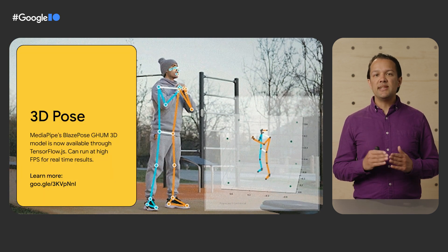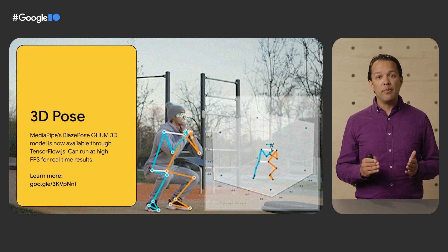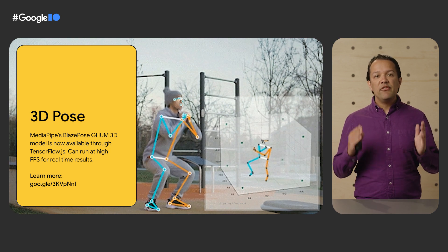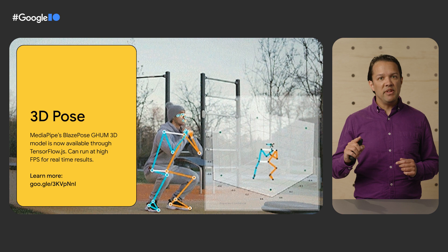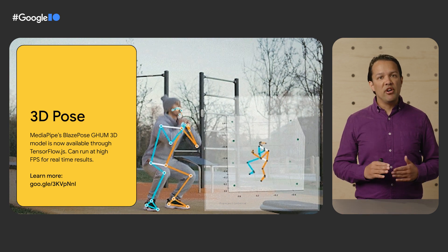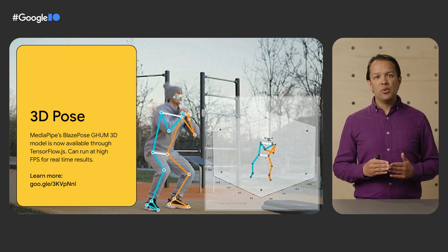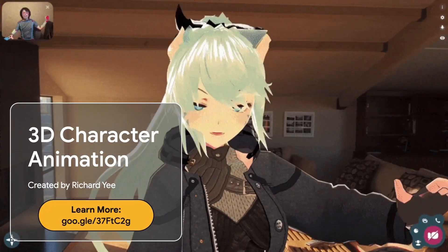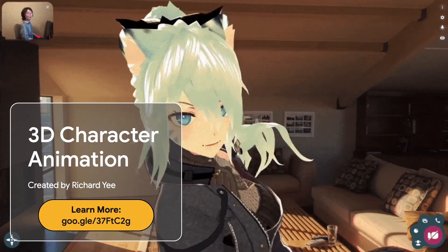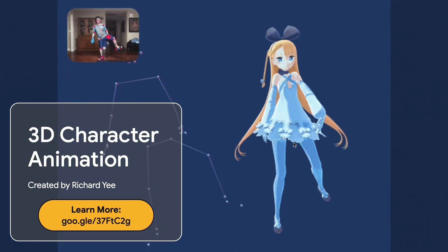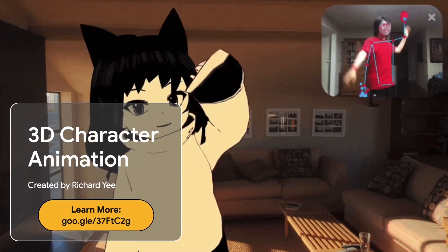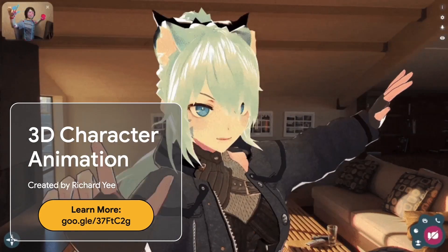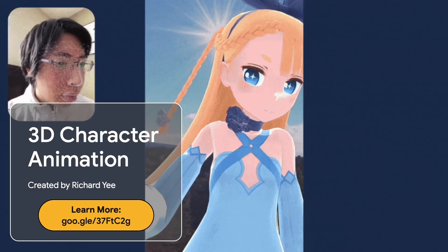Next, we also launched a 3D pose estimation model in collaboration with MediaPipe, a research team here at Google, that can estimate 33 key points on a human body in real time. This model has three forms — a light, full, and heavy version — which allows you to select a trade-off between accuracy and speed. The light model, for example, can run at 150 frames per second on a modern desktop computer. We've already seen the VTuber community embrace this new 3D pose estimation model to drive virtual avatars for live streams or digital meetings using nothing more than a regular webcam, working on any device with a web browser.